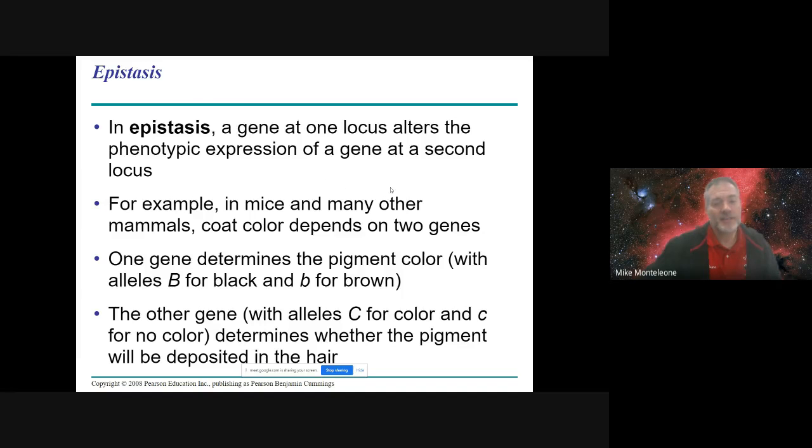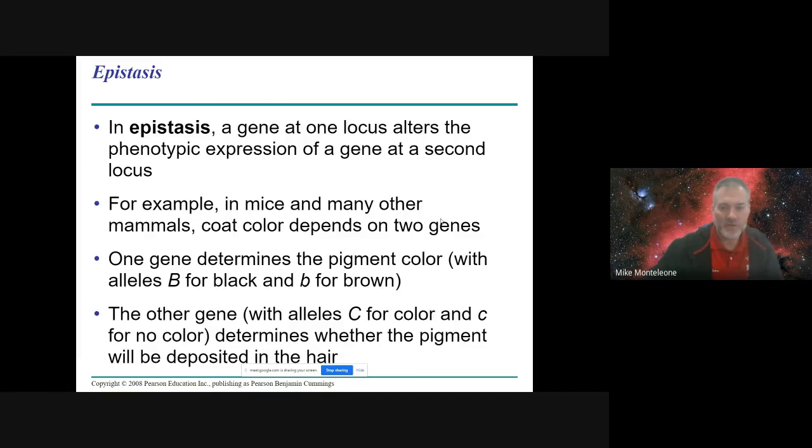Epistasis is a condition or situation where one gene pair affects the expression of another. And so we'll look at this table of rats, this Punnett square of rats, to make the point. Notice we've got B genes and we've got C genes. So the C genes are going to control the expression of the B genes. Here's what I mean. Black fur is dominant over brown fur. So big B, if you have at least one big B, you're going to have black fur because that's dominant. Every brown rat is little b, little b, recessive.